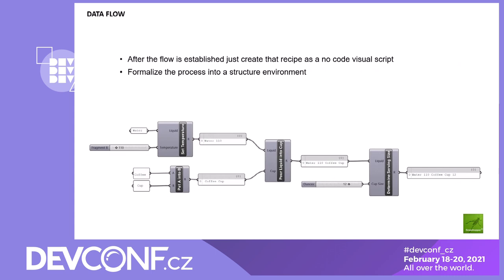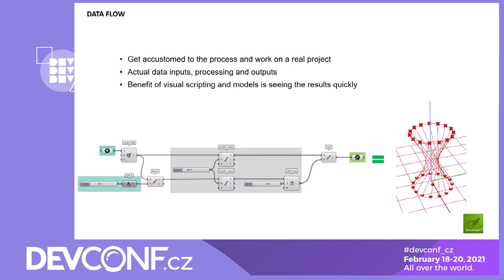We show them how to do the exact same thing with a computer using visual scripting. This time pretend it's coffee — we want to get coffee, so we need temperature, water, and a coffee cup. The water needs to get heated, so we process the temperature. We put the water and the coffee cup together, pour liquid in the cup, and now we have a hot cup of coffee. Then we figure out how much to put in — 12 ounces — we can't take that for granted because we don't know how big the coffee cup is. Once they get used to this thinking process of inputs, discrete steps, and analysis, we can get them to do it with an actual model — same thing: inputs, division of surfaces, connecting them again, and creating a design output.